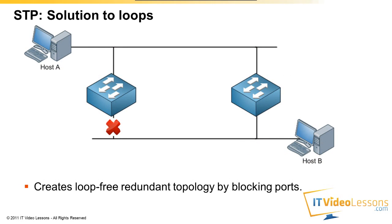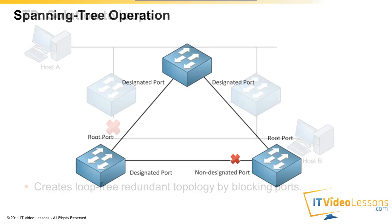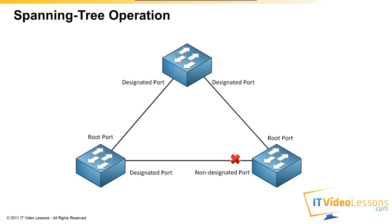So the solution to all of these problems is Spanning Tree. What we want to do with Spanning Tree is make sure that we have redundancy, but that it is loop free. What Spanning Tree is going to do is block one of the ports — if we block one of the ports, we don't have a loop anymore and we don't have all of these problems. You can see the red cross at the bottom right — that's the non-designated port, and Spanning Tree is going to block the non-designated port.